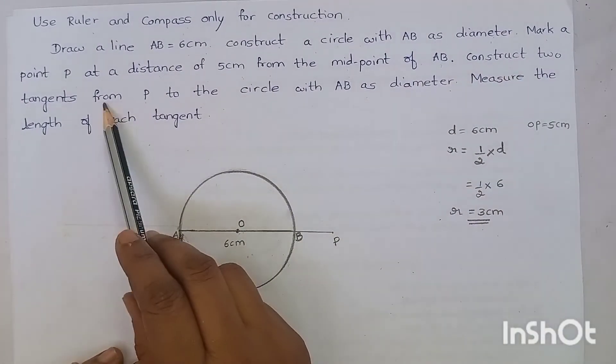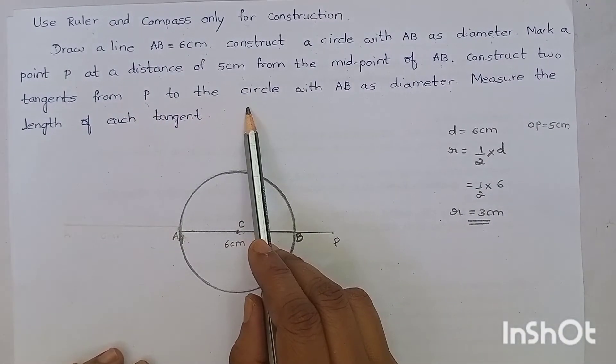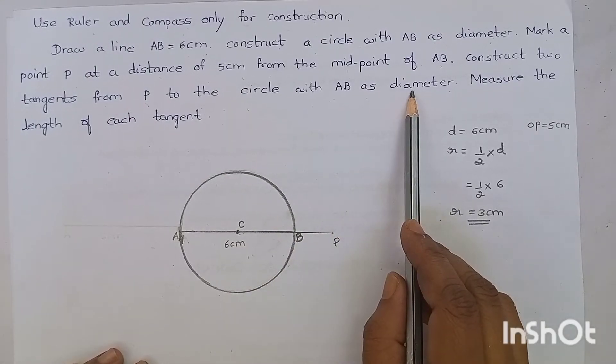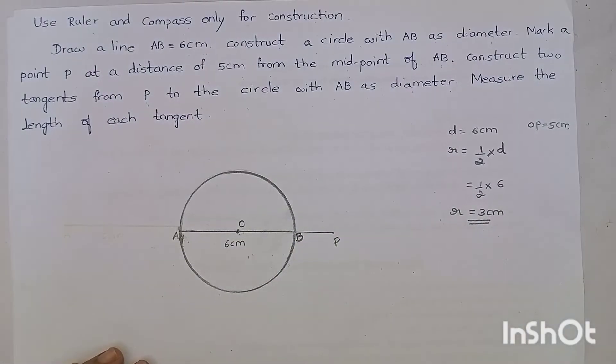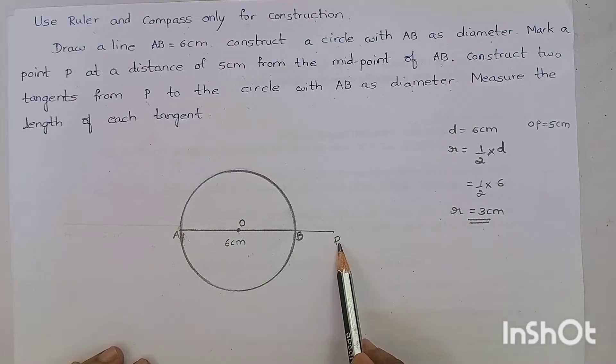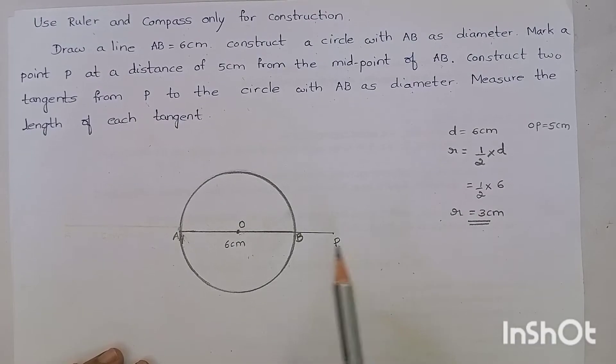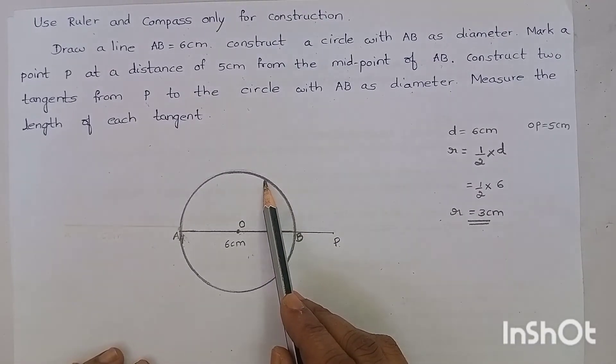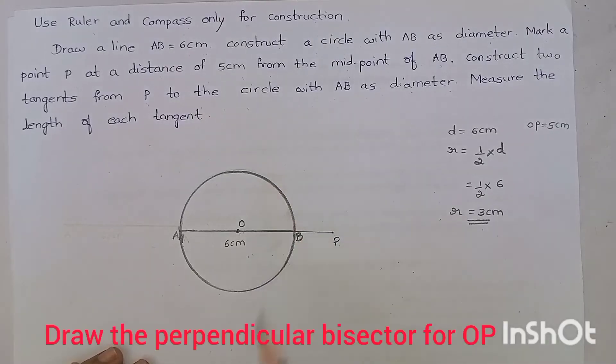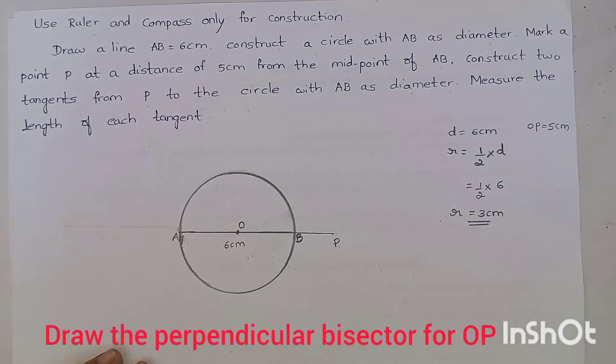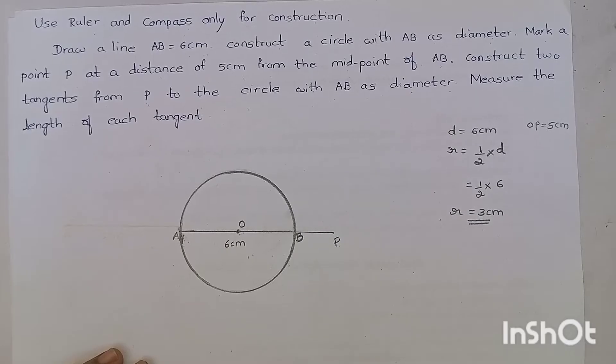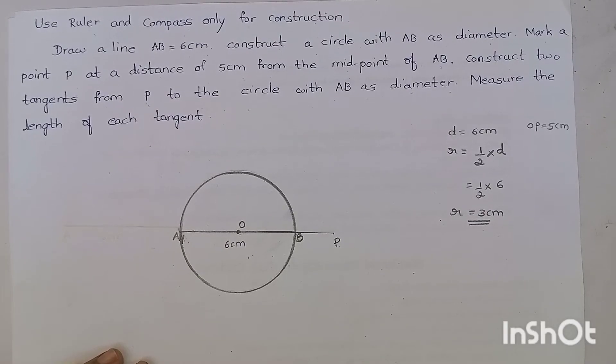Construct two tangents from P to the circle with AB as diameter. Look at this. From the point P, we have to draw two tangents to this circle. To do this, we have to draw a perpendicular bisector. Then, how to draw a perpendicular bisector?